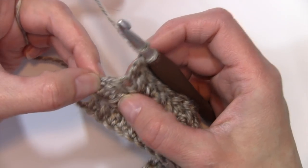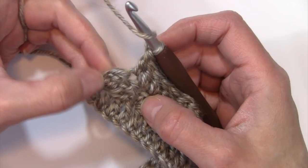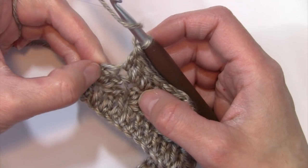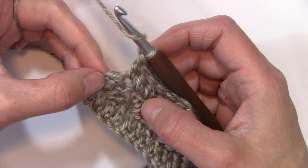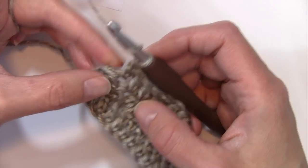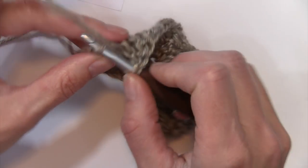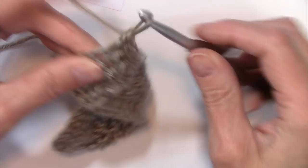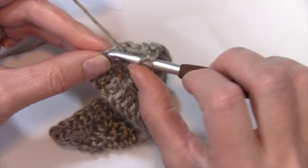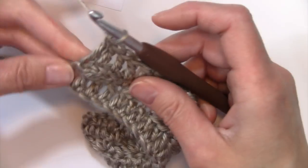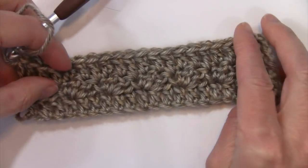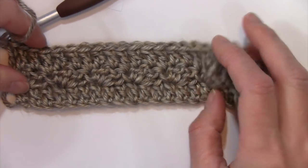So that can be tricky for people because it doesn't look like a stitch. It is a turning chain basically, but it did count as a stitch, and we're going to use it as a stitch. So we're going to double crochet at the top of this last double crochet, and then I'm going to double crochet in that chain one that we did at the beginning. So that's all there is to it.